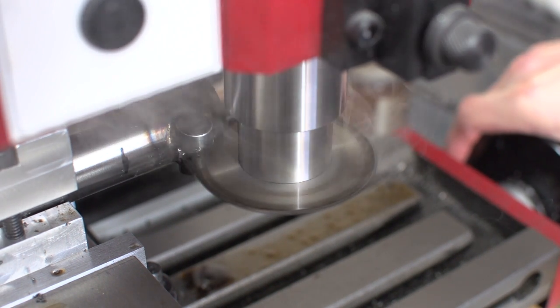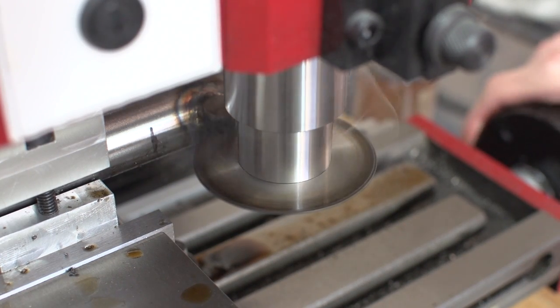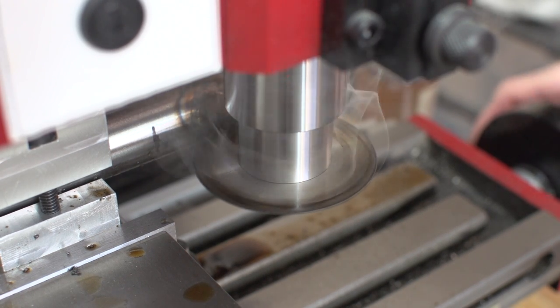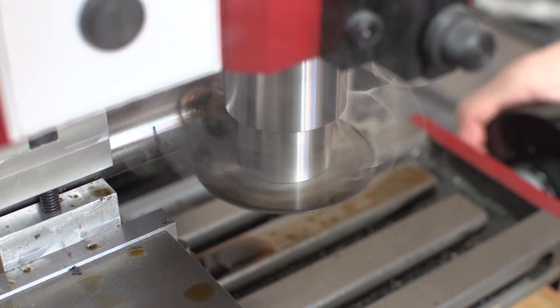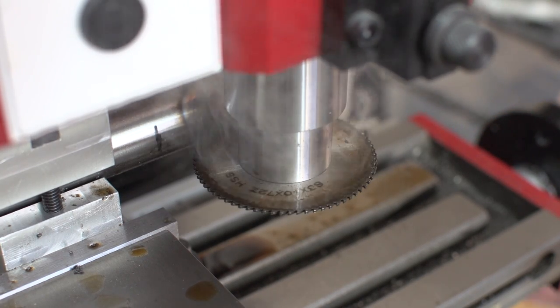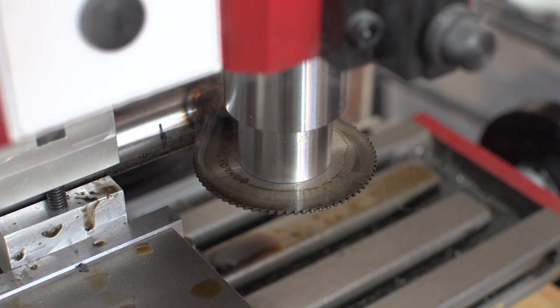So I pulled the saw away from the workpiece more so it wasn't trying to cut as much material at once. And I also slowed the RPMs down. And in doing so, because this thing doesn't have a lot of torque, it kept getting stuck and stopping.